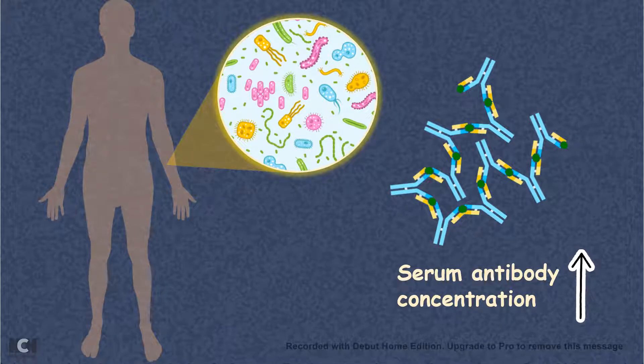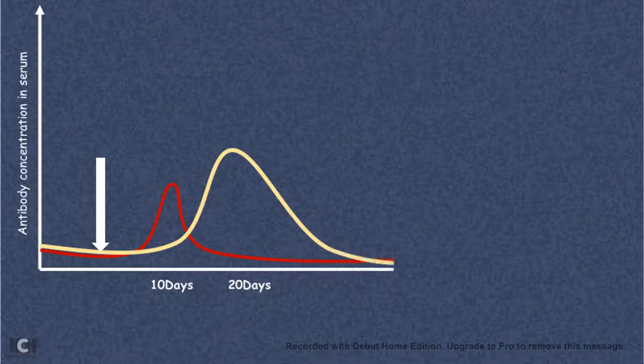Now let's look at the same thing in a graphical format. Let's say our body is invaded by the pathogen and we are looking at the antibody concentration in the serum. On the x-axis we are looking at days after which the invasion happened. This white arrow demarks the time of pathogenic invasion.